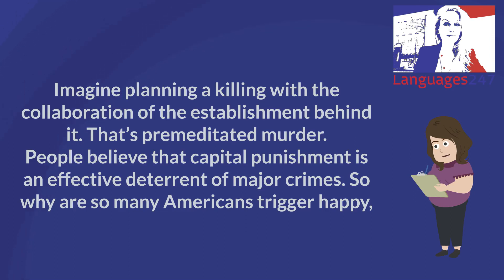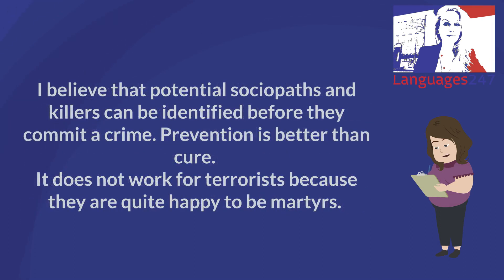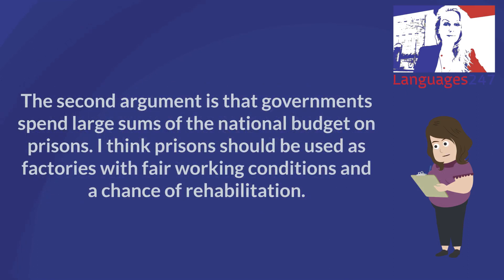Imagine planning a killing with the collaboration of the establishment behind it — that's premeditated murder. People believe that capital punishment is an effective deterrent of major crimes, so why are so many Americans trigger happy? I believe that potential sociopaths and killers can be identified before they commit a crime — prevention is better than cure. It does not work for terrorists because they are quite happy to be martyrs. The second argument is that governments spend large sums of the national budget on prisons.